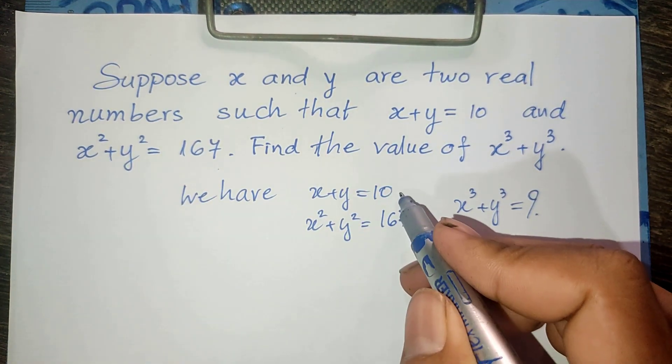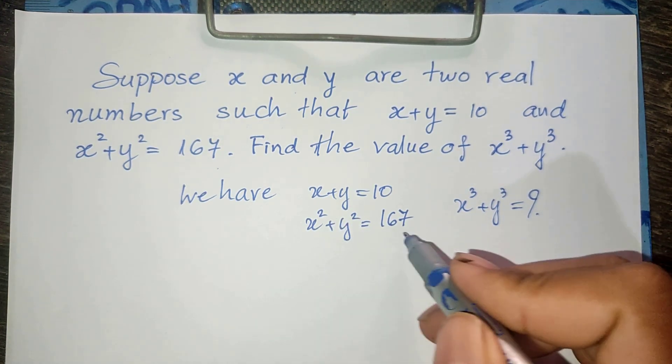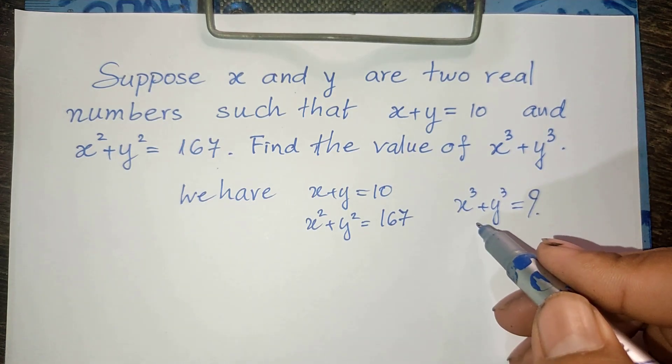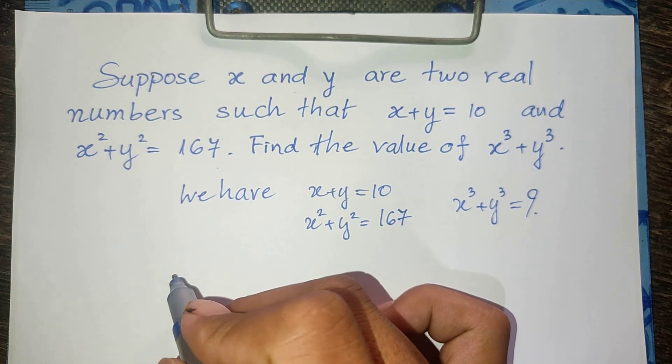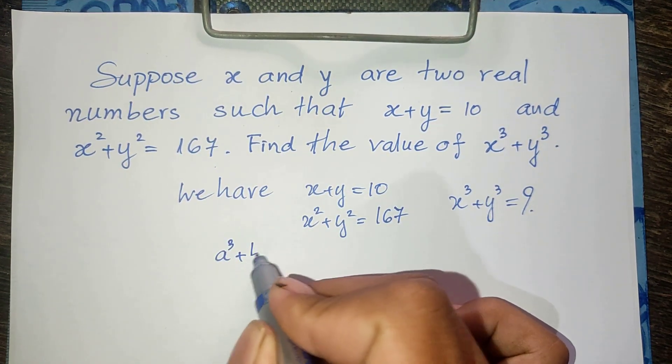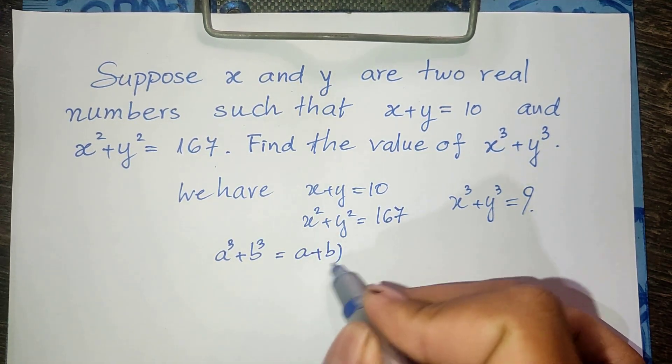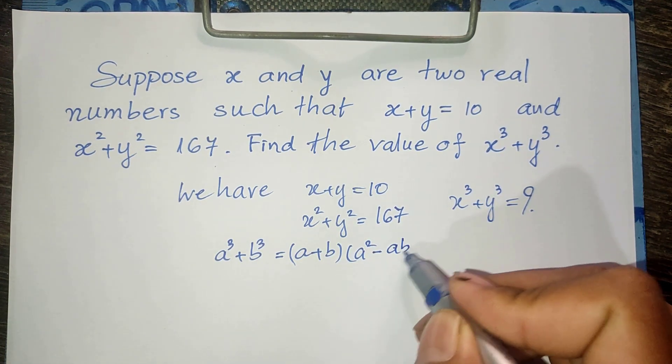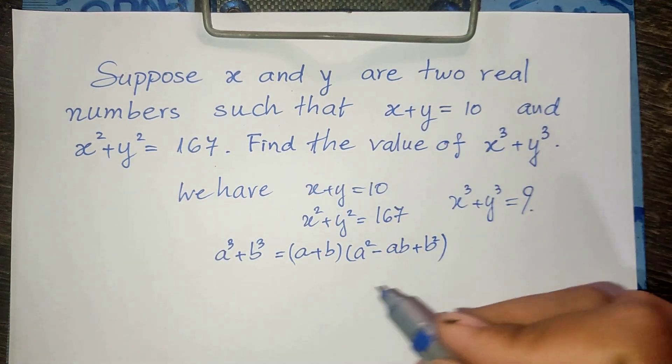You know that x squared plus y squared equals 167. But do you know the rule of this equation? a power 3 plus b power 3 equals a plus b, and multiply a squared minus ab plus b squared.